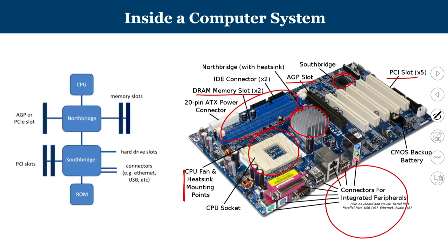Looking at the broader block diagram, we have a CPU and two bridges — the north bridge and the south bridge. The north bridge connects the AGP and PCI slots, including the graphics card, coprocessors, and other fast peripheral connections, as well as the memory slots. All high-speed coprocessors and devices that communicate with the CPU are connected through the north bridge. The normal PCI slots, parallel port connections, hard disk, and other I/O devices are connected to the south bridge.